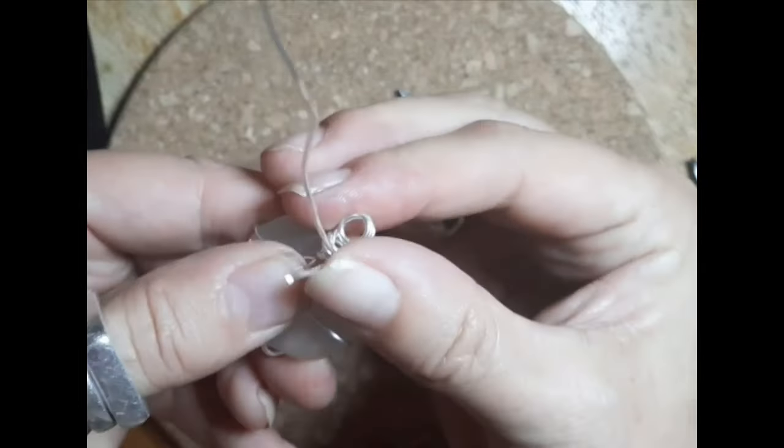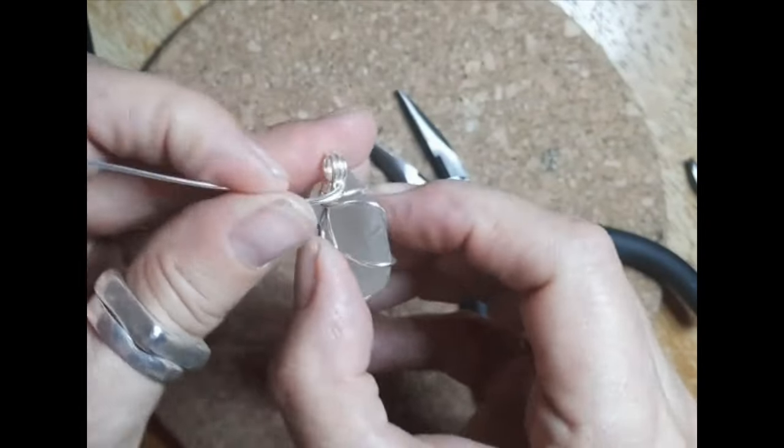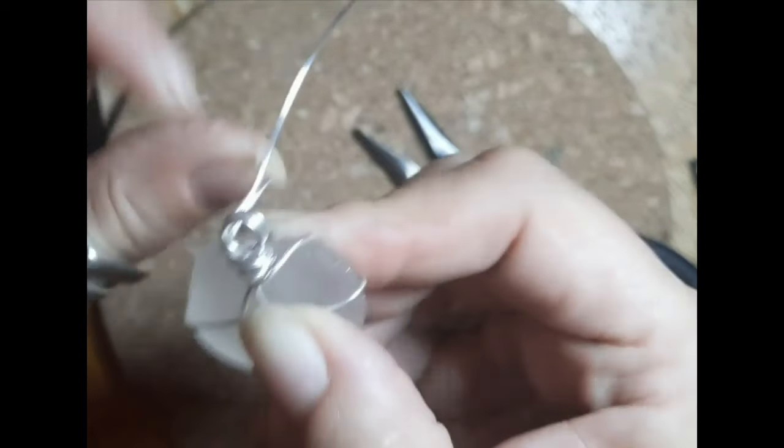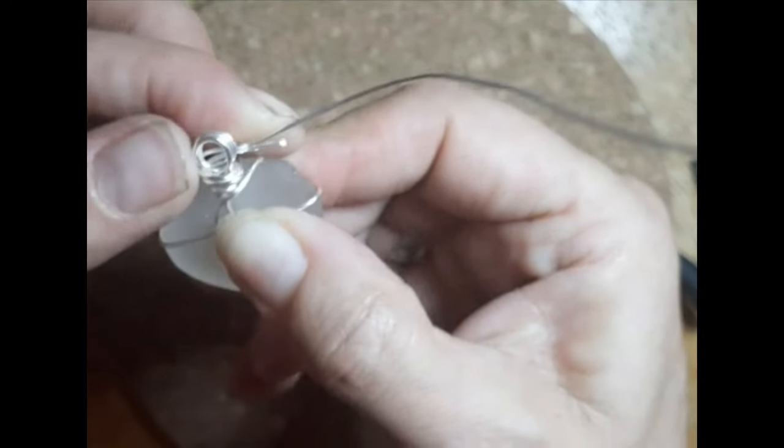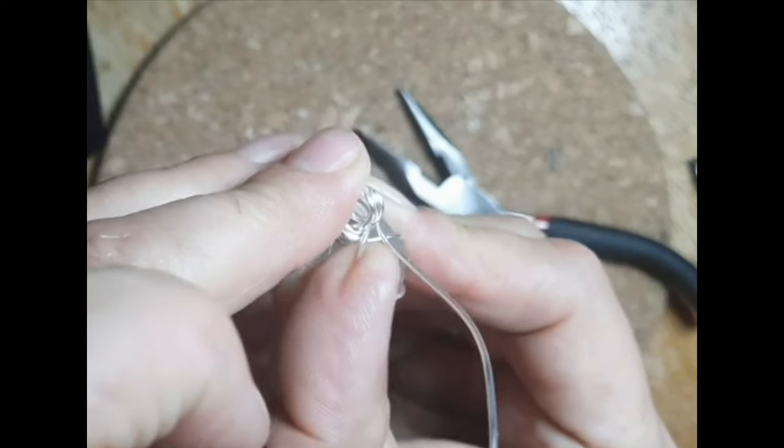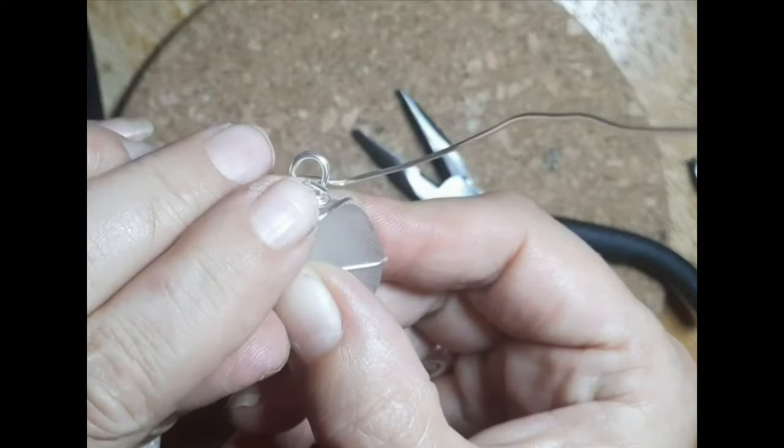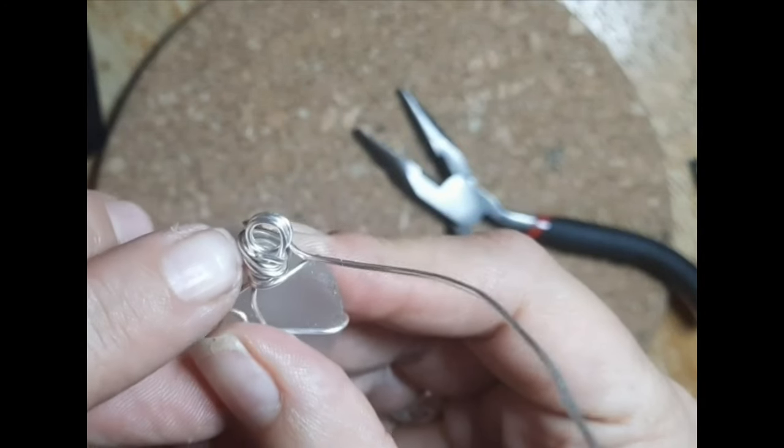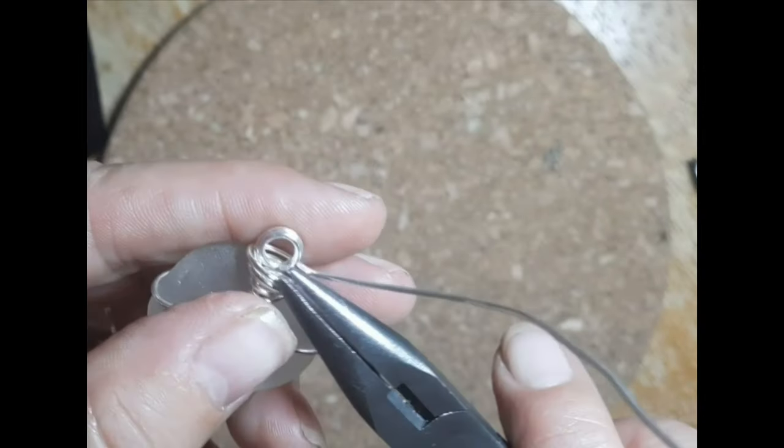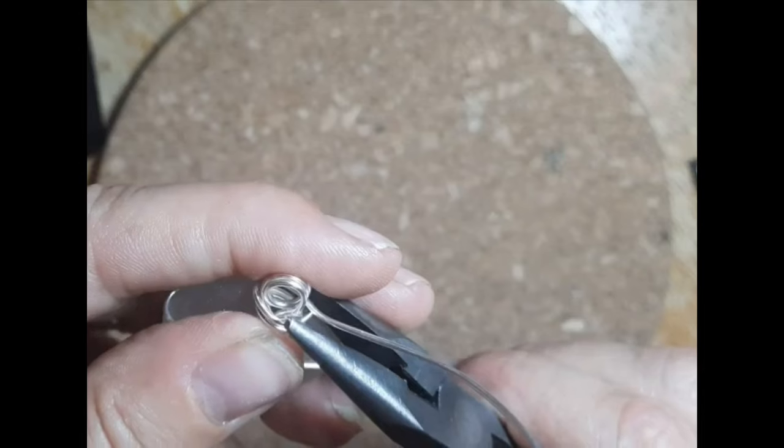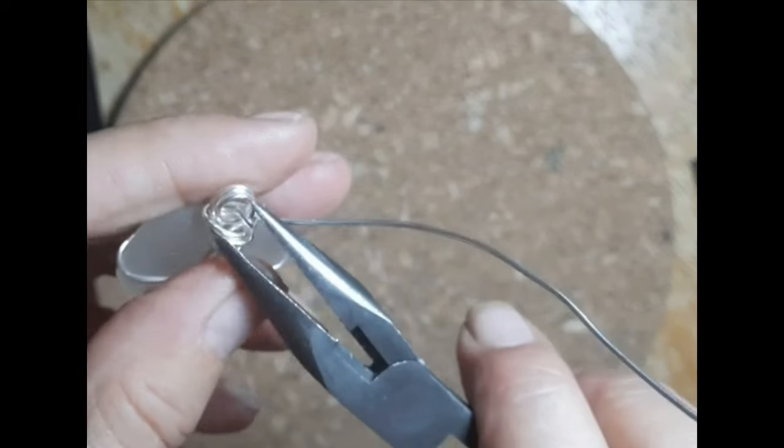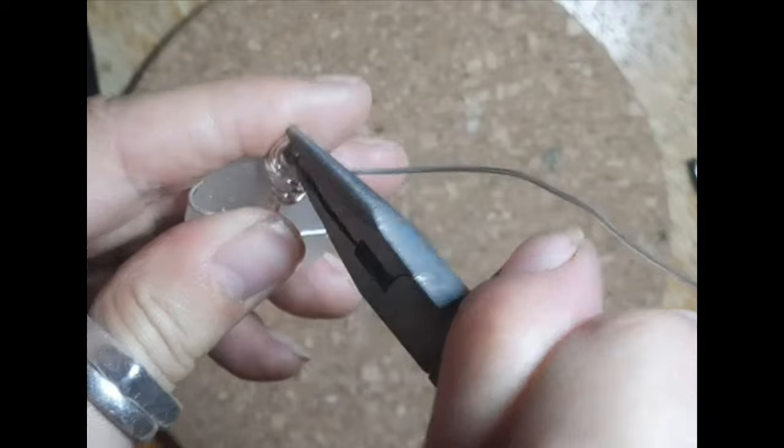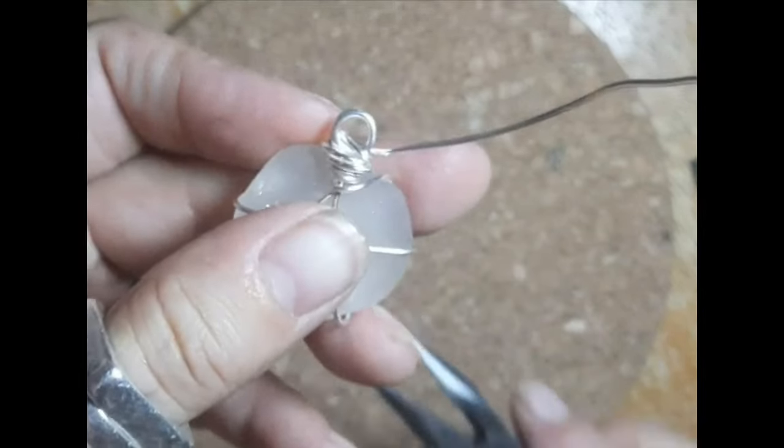So you can take these two wires and start to wrap around your bail. You can scarf it around, and then that little end there can be tucked into the little bowl that you've created here. Push that in with your pliers to tuck it in so that there's no sharp edges.